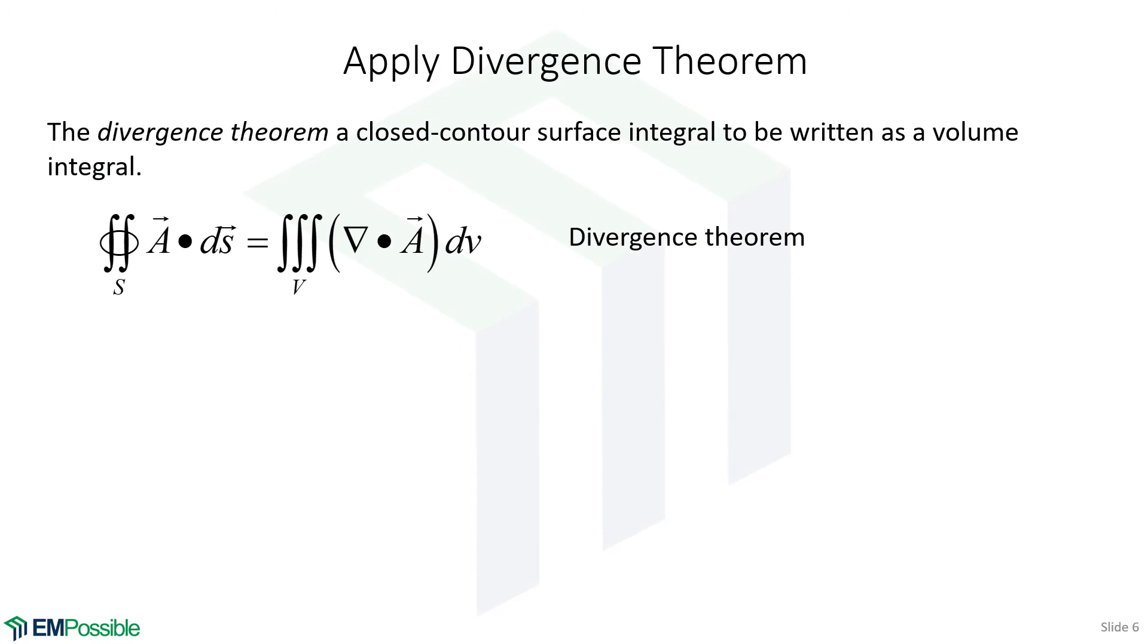Let's write Gauss's law for magnetic fields in differential form. And to do this, we will make use of the divergence theorem. Let's remember quickly what the divergence theorem is. It's a way to convert a surface integral into a volume integral.